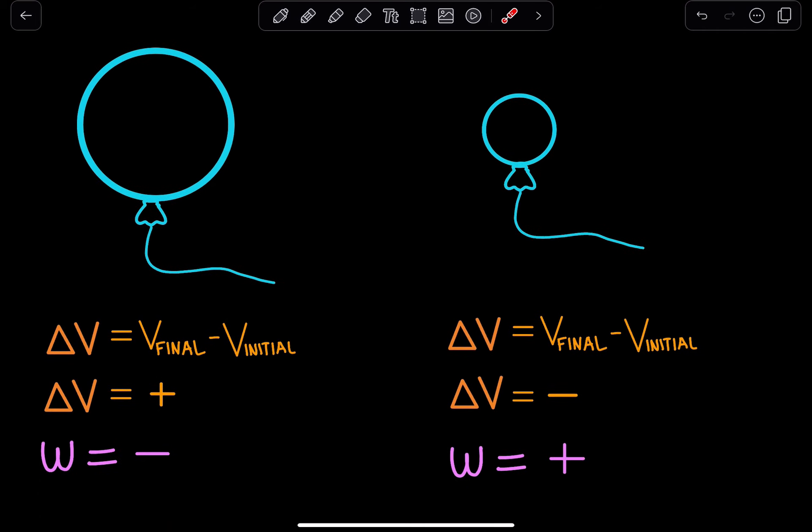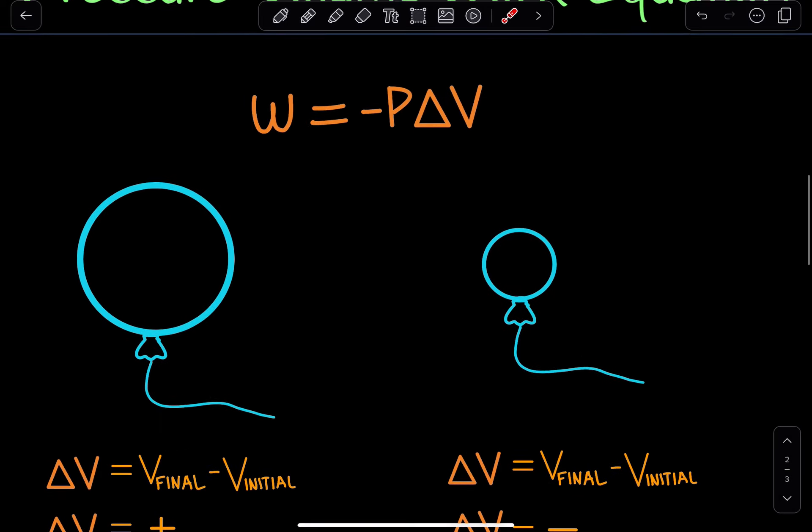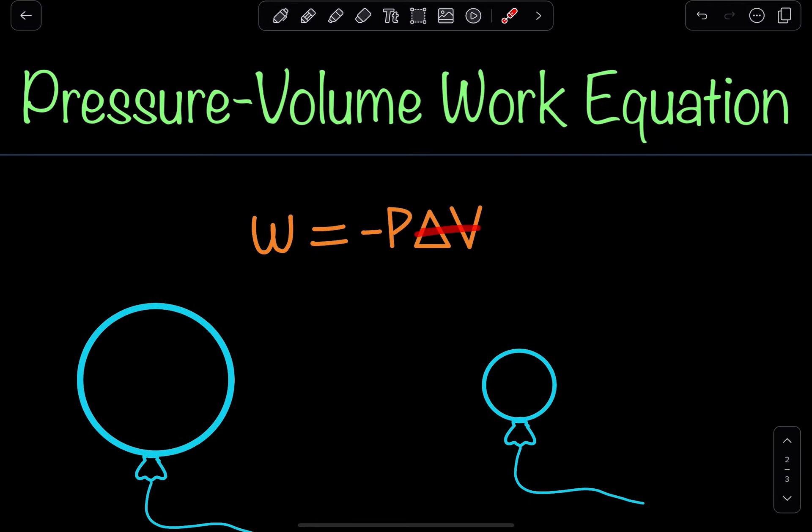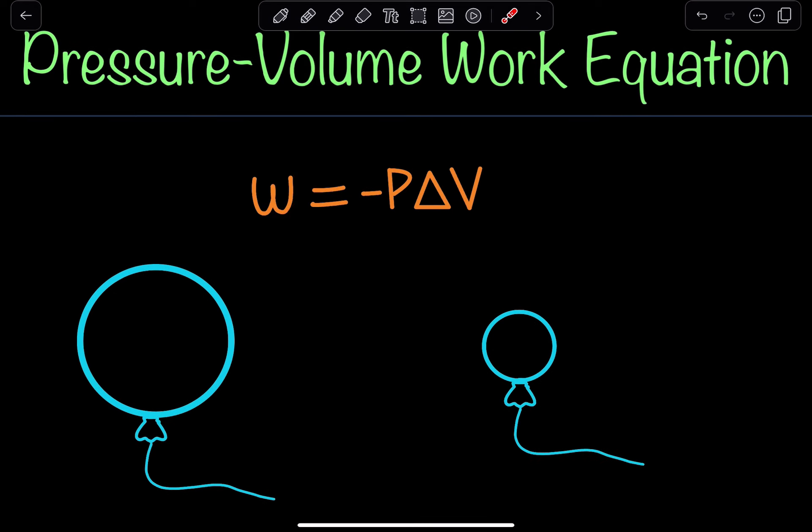So if my change in volume is negative, the work overall is going to be positive. Now, why is that? Because if I have a negative value right over here, a negative times a negative is going to give me a positive. So work is positive. And as a result, we can conceptually understand that a positive work value means that the surroundings is doing work on the system. And in this case, the surroundings may be that I applied pressure to decrease the volume of that balloon.